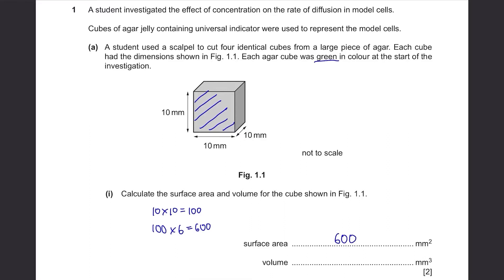Then to find the volume, you multiply all these three numbers together, so it's 10 times 10 times 10 equals to 1000.